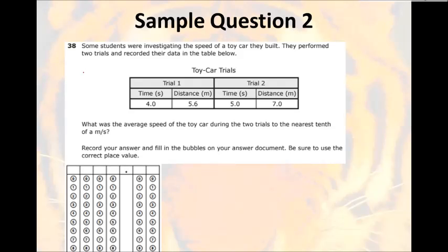Let's look at our next sample question. On this next sample, we've got a griddable problem. So, we got to make sure we bubble these grids in correctly and we get all that work done correctly. On sample two, some students were investigating the speed of a toy car they built. They performed two trials and recorded their data in the table below. What was the average speed of the toy car during the two trials to the nearest tenth of a meter per second? Record your answer and fill in the bubbles on your answer document. Be sure to use the correct place value. Same toy car, two different trials. So, let's just work with trial one first. Got to remember my formula.